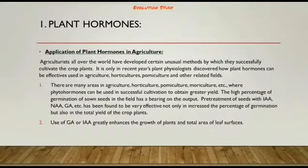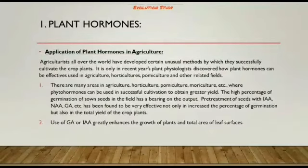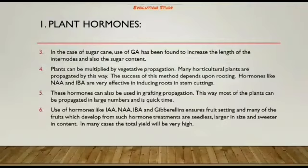A high percentage of germination of sown seeds in the field has a bearing on output. IAA and GA have been found to be very effective not only in increasing the percentage of germination but also in the total yield of the crop. Use of GA or IAA greatly enhances the growth of plants and the total area of leaf surfaces. In sugarcane, use of GA has been found to increase the length of internodes and sugar content.